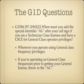When must you add the special identifier AG after your call sign if you are a technician class licensee and have a CSCE for general class operator privileges? You've got to add AG after your call sign whenever you operate using general class frequency privileges. If you're operating on general class frequencies prior to getting your general class license through the ULS, you have to include the AG. If you operate on technician class license privileges, you don't have to do that.